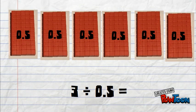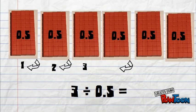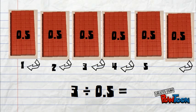In order to find the answer, we must see how many groups of 5 tenths we have. We have 1, 2, 3, 4, 5, and 6. 3 divided by 5 tenths is 6.